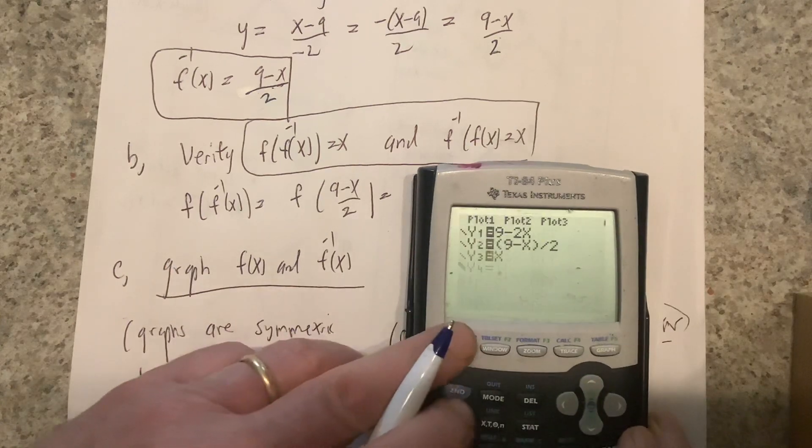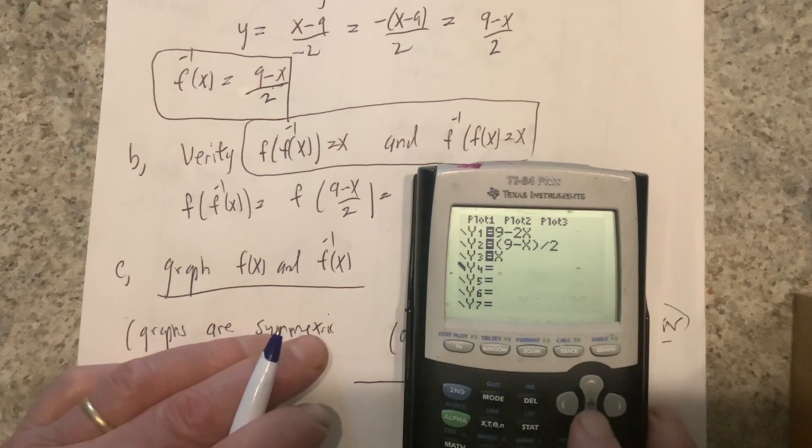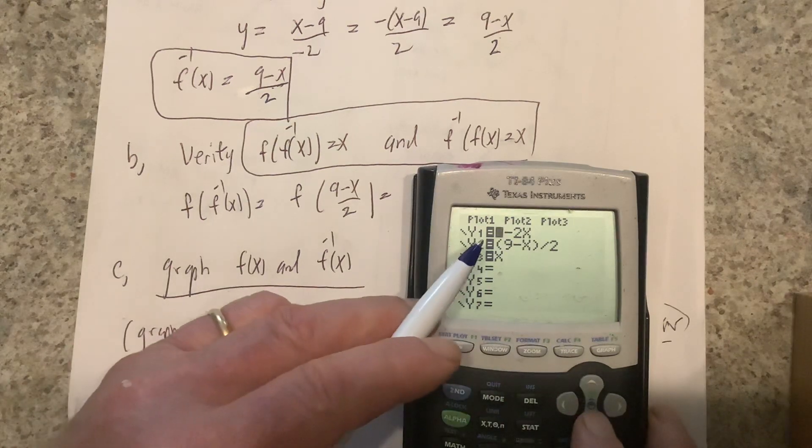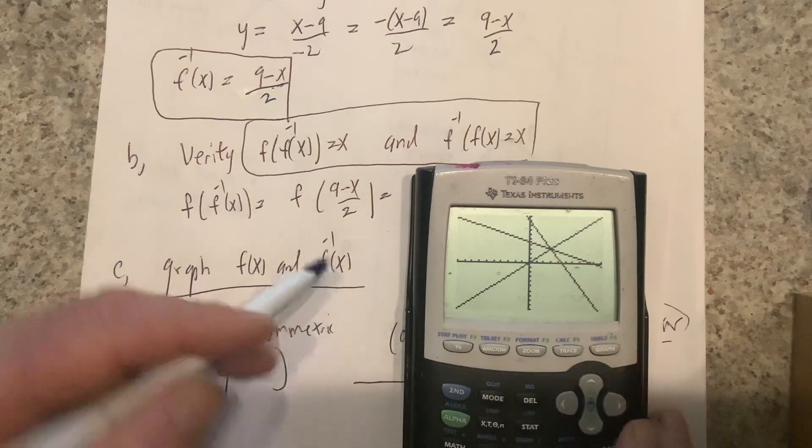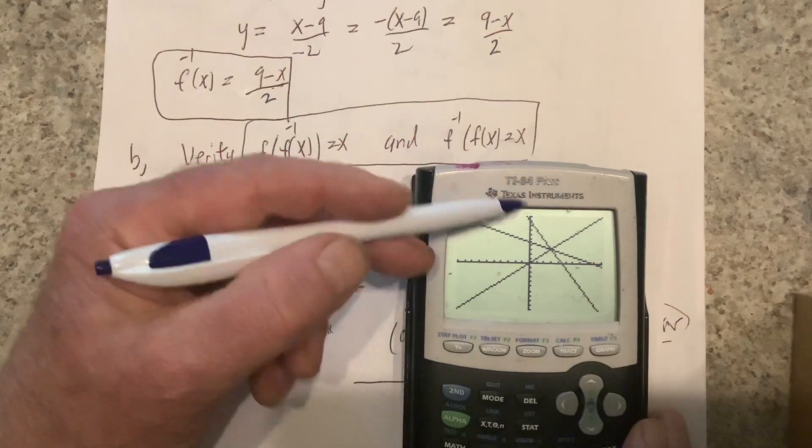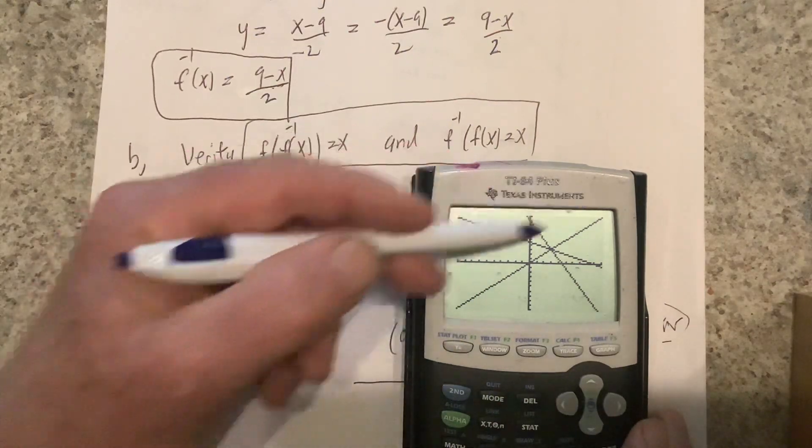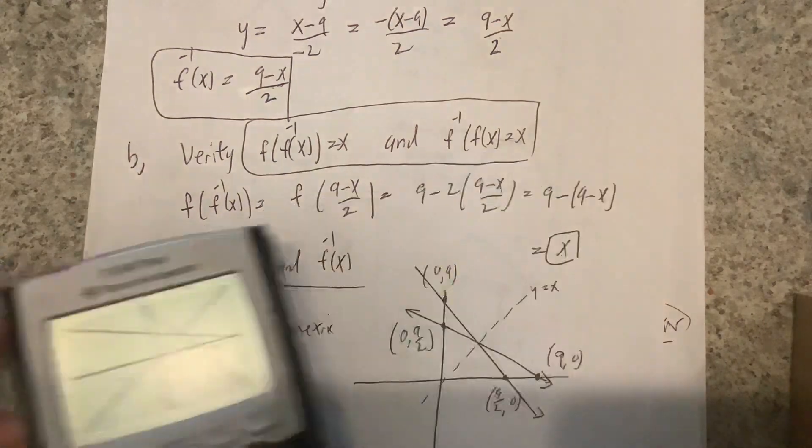Let me just graph all these. This is the function, this is the inverse function, and this is y equals x. So you see the graphs are symmetric with respect to y equals x. Anyway, that's it.